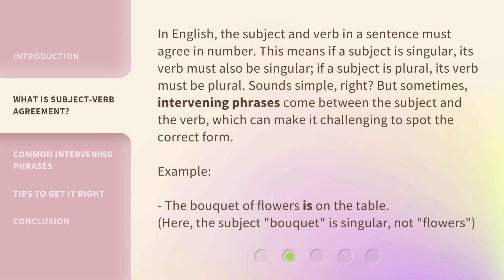In English, the subject and verb in a sentence must agree in number. This means if a subject is singular, its verb must also be singular. If a subject is plural, its verb must be plural. Sounds simple, right? But sometimes, intervening phrases come between the subject and the verb, which can make it challenging to spot the correct form.